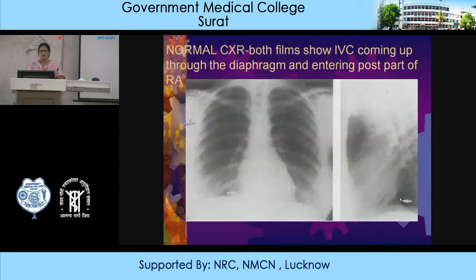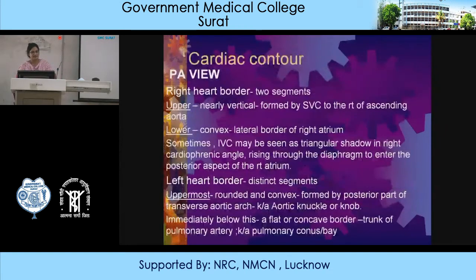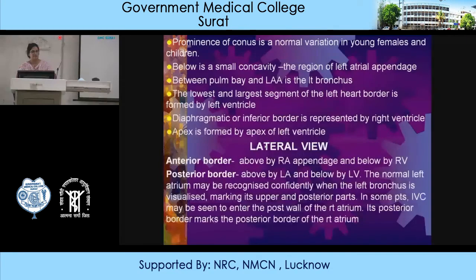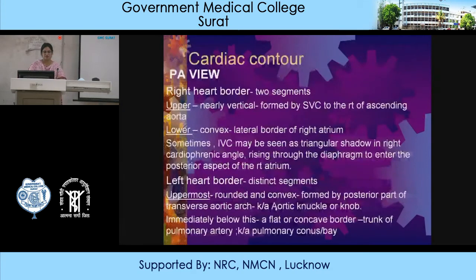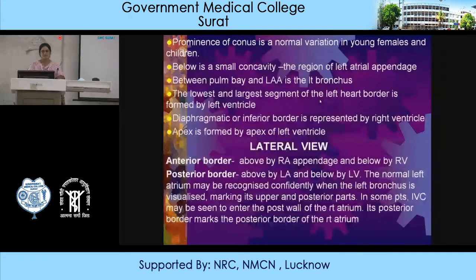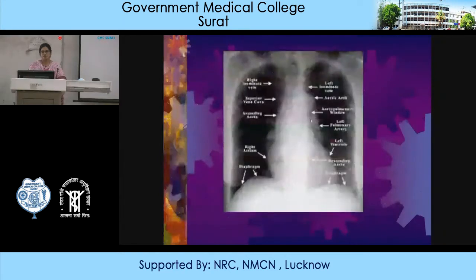On the lateral view, the cardiophrenic angle is visible. The left heart border has distinct segments. The right heart border is formed by the SVC and the right atrium. The left heart border starts with a rounded convex segment formed by the posterior part of the transverse aortic arch, known as the aortic knuckle or knob. Immediately below is a flat or concave border formed by the trunk of the pulmonary artery, known as the pulmonary conus or bay.